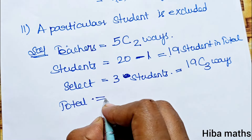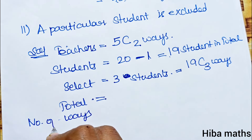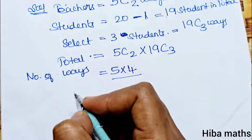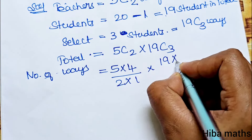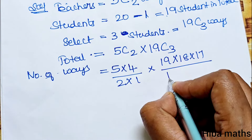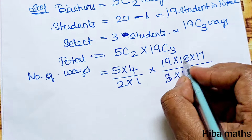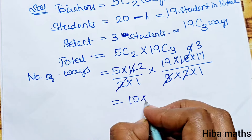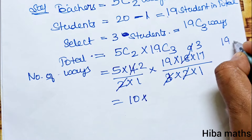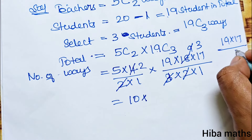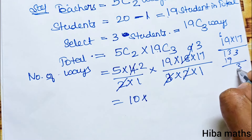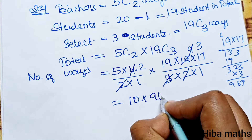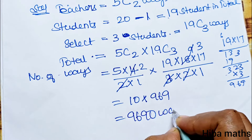Total number of ways = 5C2 × 19C3. Expanding: 5 × 4 divided by 2 × 1, multiplied by 19 × 18 × 17 divided by 3 × 2 × 1. Simplifying: 10 × 969 = 9690 ways. This is the answer.